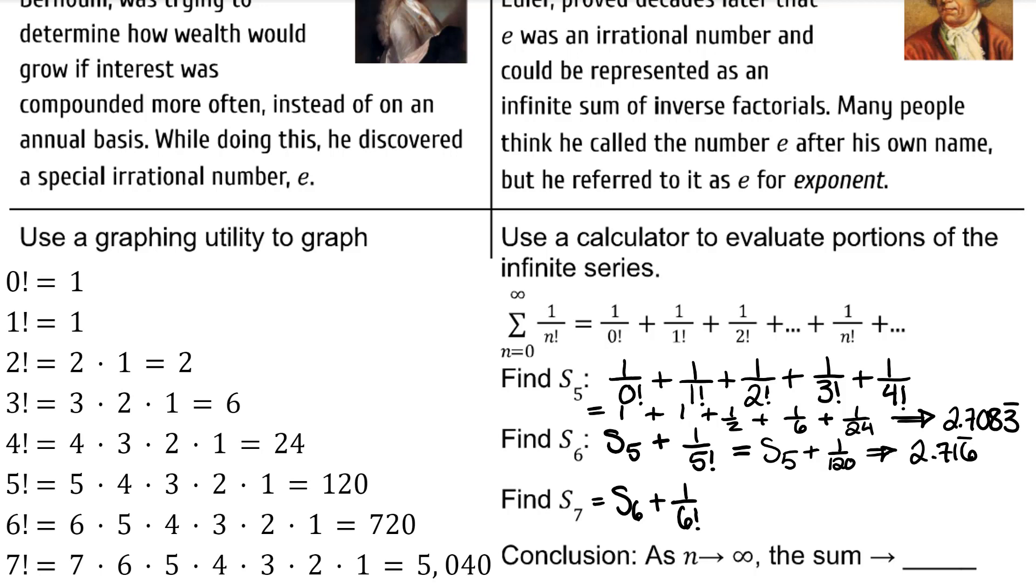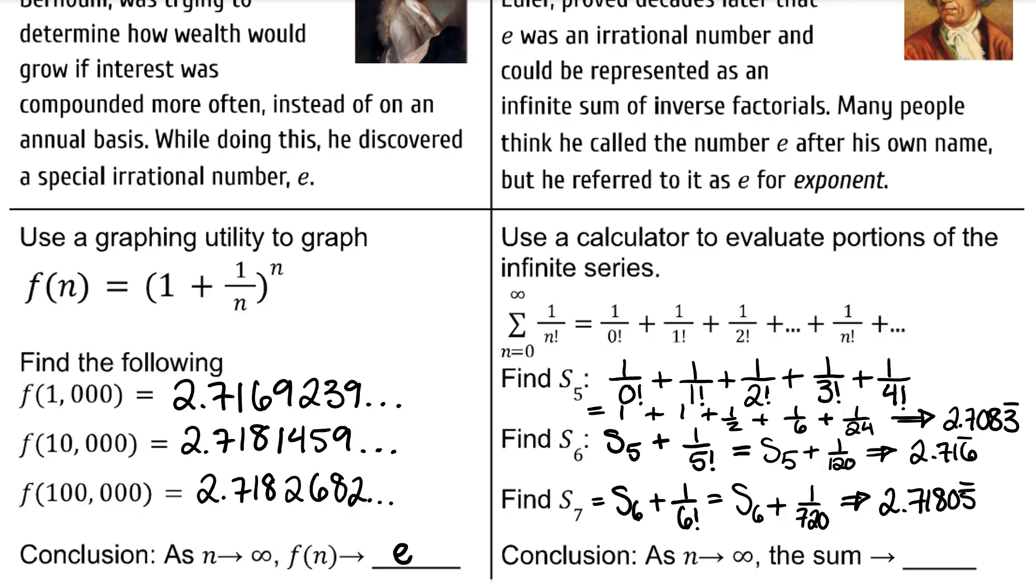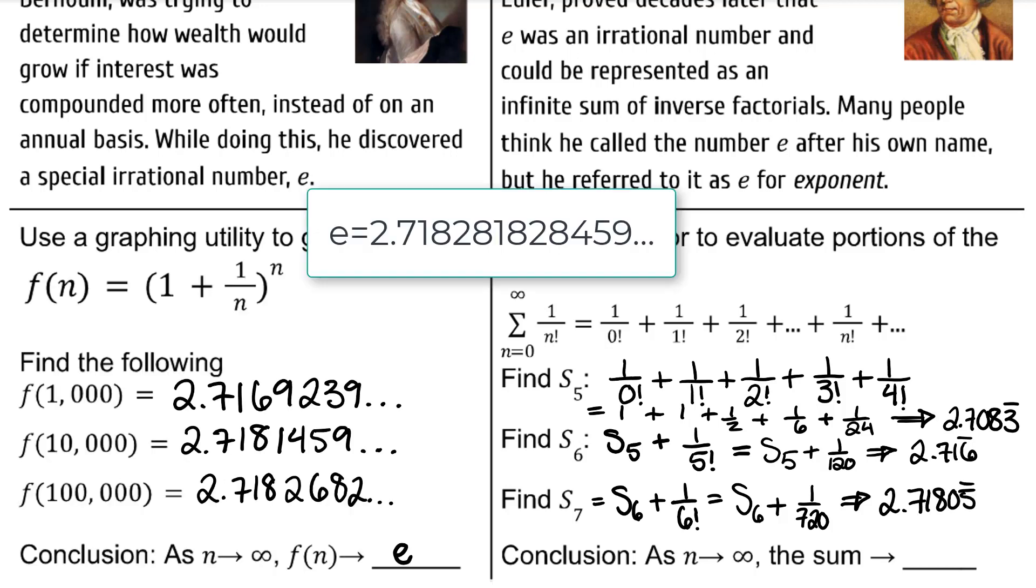And the same for S sub 7. We could take the sum of the first 6 and add the next one, and you get 2.7180555 repeating. As you add more and more fractions, you will get closer and closer to the number e.